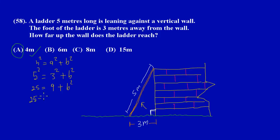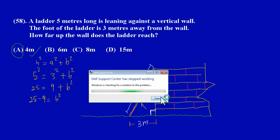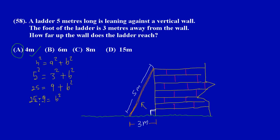25 - 9 would leave us with 16 = b². Since we want to find the value of b, which is really the height of the vertical wall, then we would have to do the opposite of square which is to take a square root of both sides.